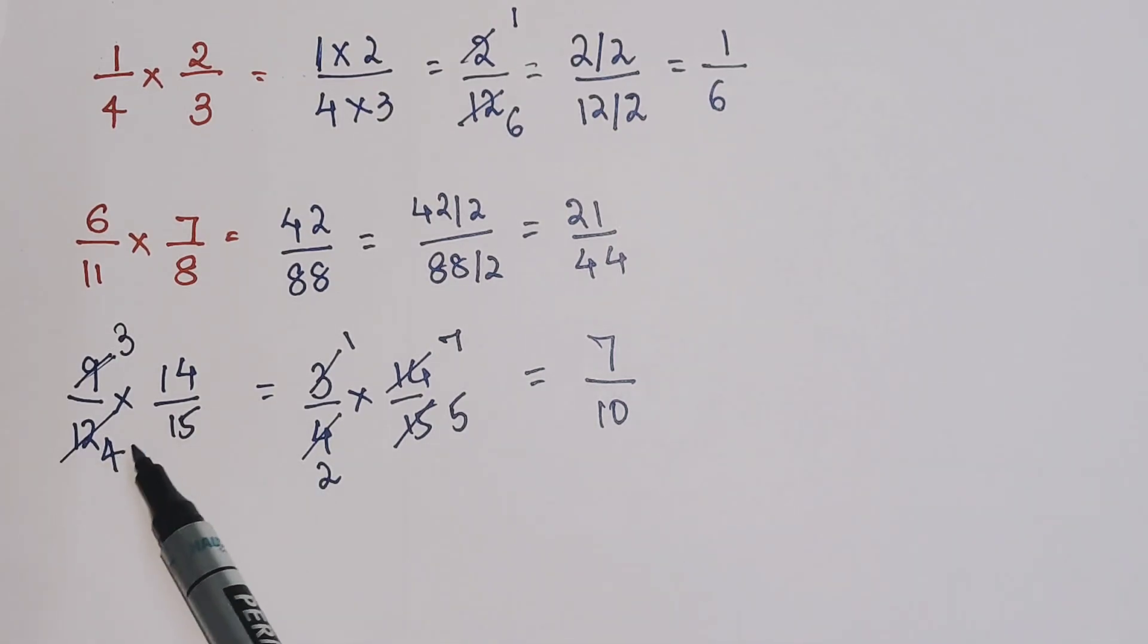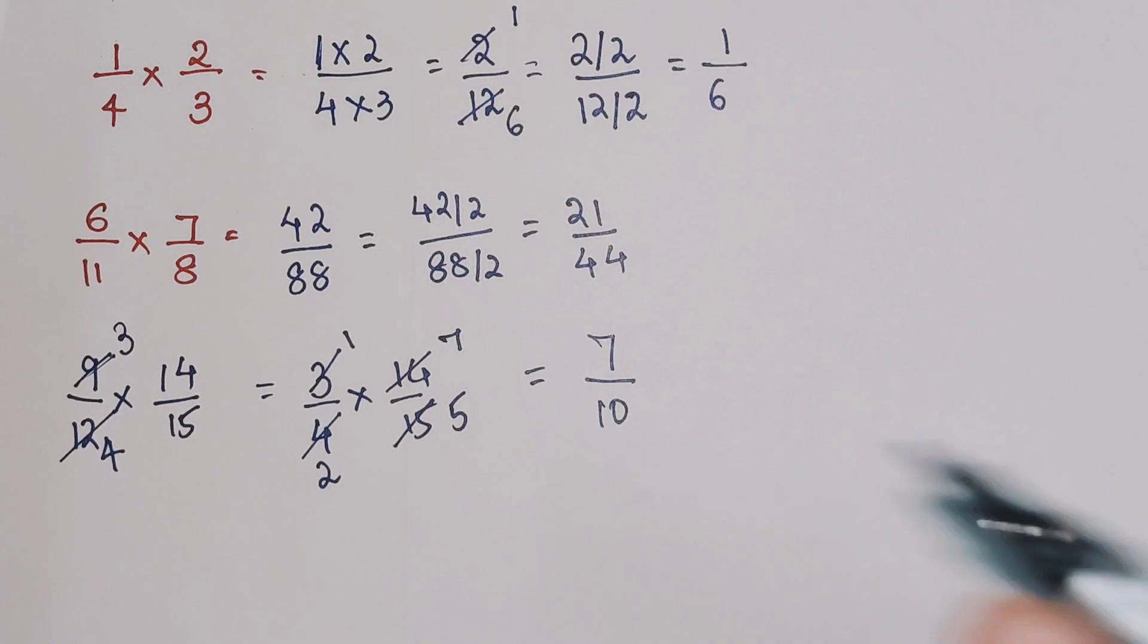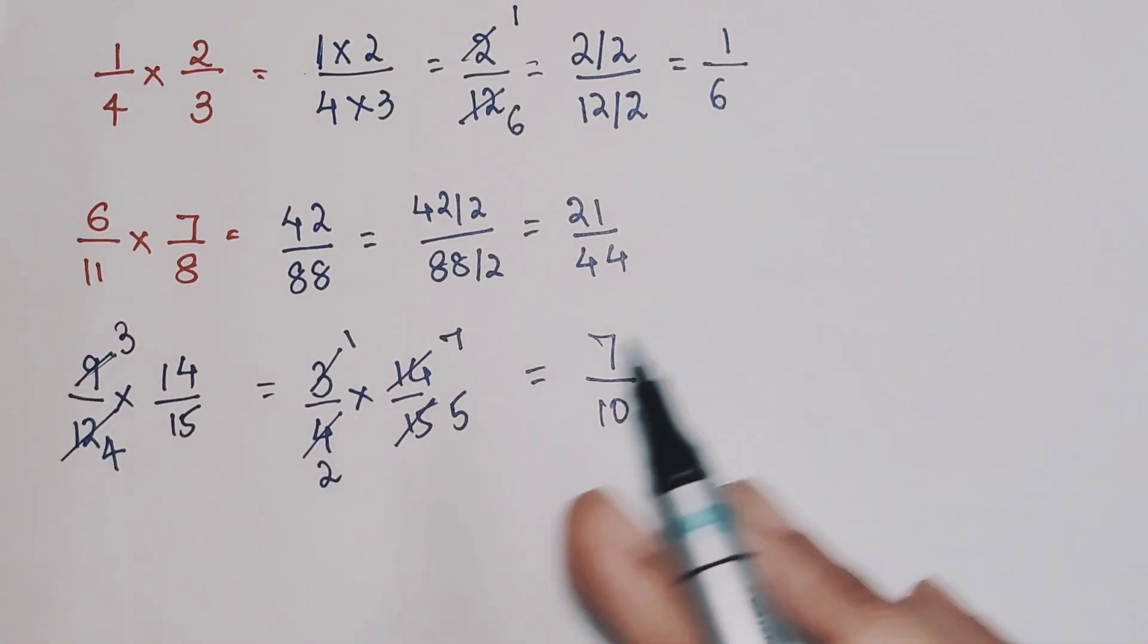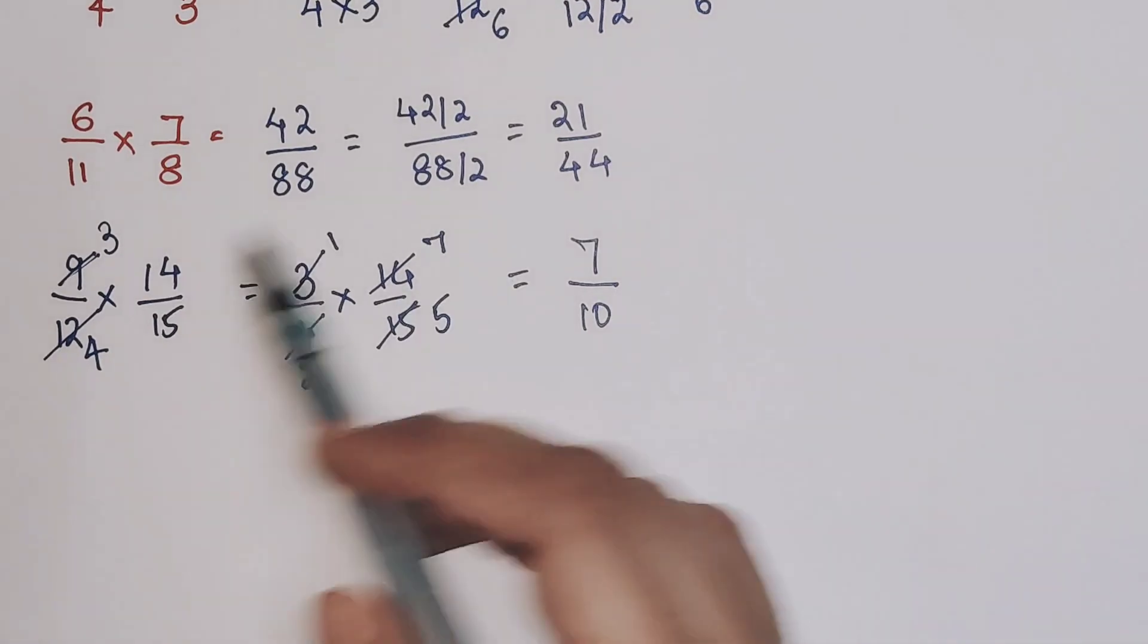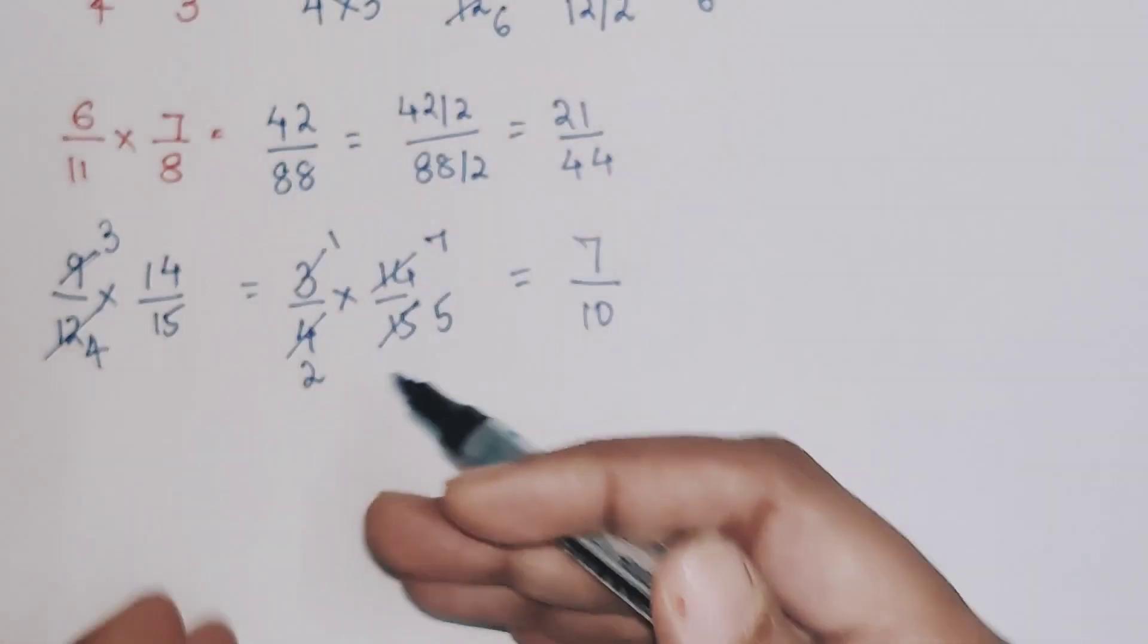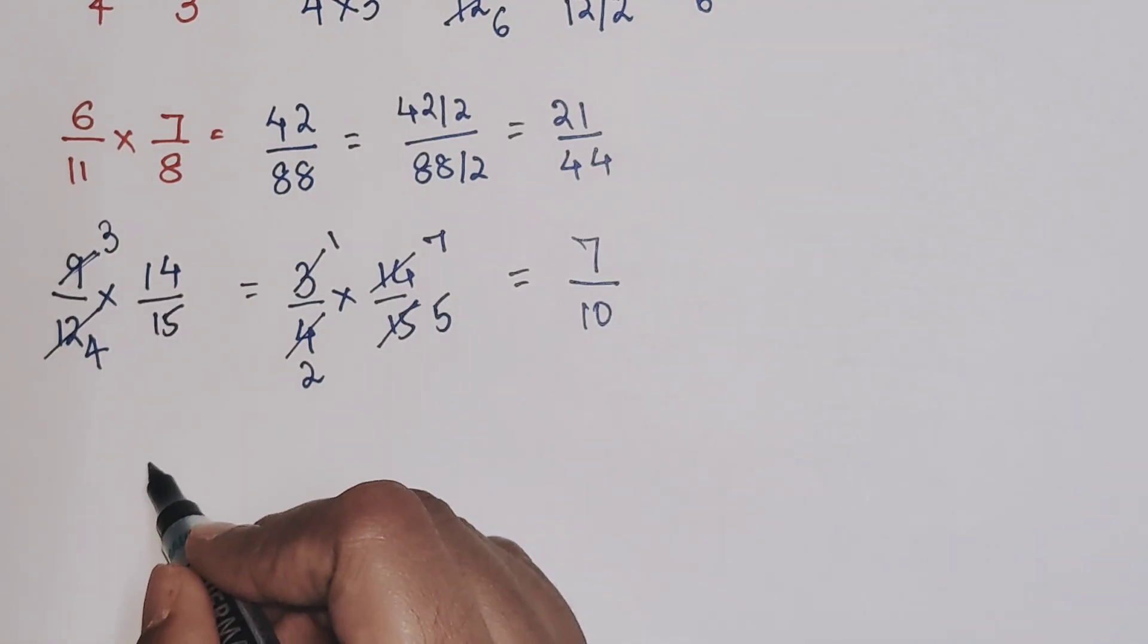Imagine if you had multiplied 9 and 14, and 12 and 15, and then you had to do the whole cancellation process. Things would have become very difficult, and the scope for you to make mistakes would become even larger. So here in such cases, it's better to simplify the given numbers itself, and then you do the actual multiplication.